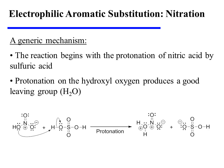The reaction begins with the protonation of nitric acid by sulfuric acid. It may be tempting to protonate the negatively charged oxygen atom; however, the adjacent charges of opposite polarity in nitric acid stabilize one another. Therefore, protonation occurs on the hydroxyl group instead, creating an oxonium ion, which will serve as a good leaving group.